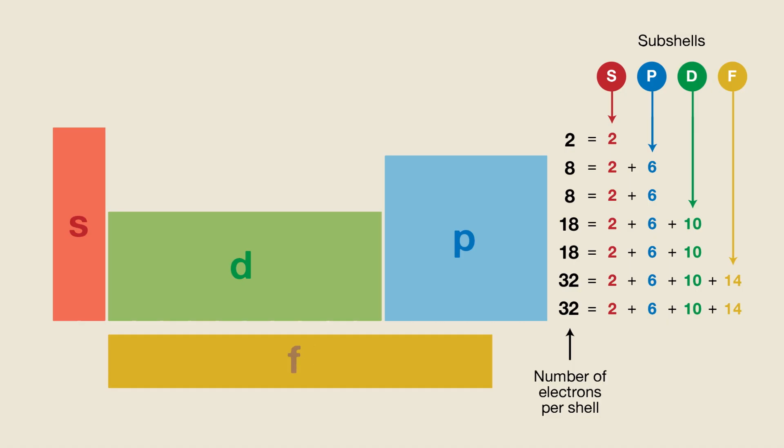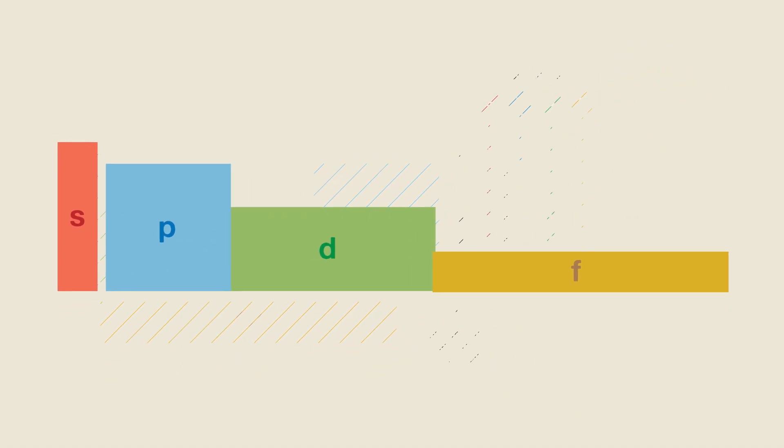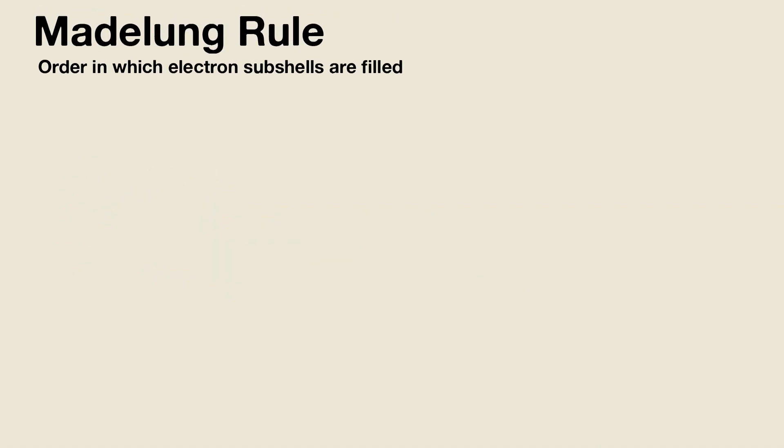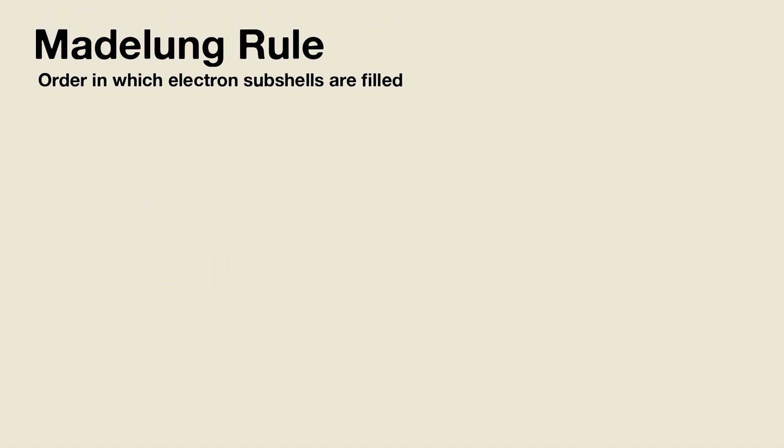But why then does the periodic table not look like this? Well, not only does each shell and subshell hold a different amount of electrons, the way in which they fill up also follows a very distinct pattern. It's called the Madelung rule and let me show you how it works.